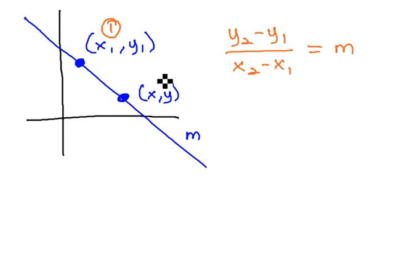Well, if we call this top point, point 1, and the bottom point, point 2, let's see what we get when we plug this in. Let's do it in a different color. We end up with y minus y1 over x minus x1 equals m.